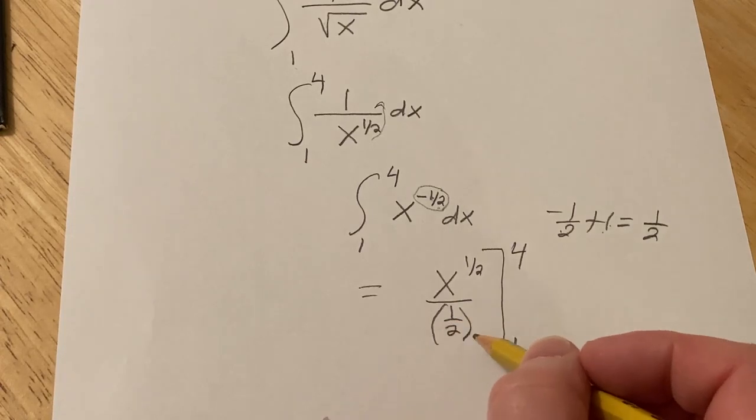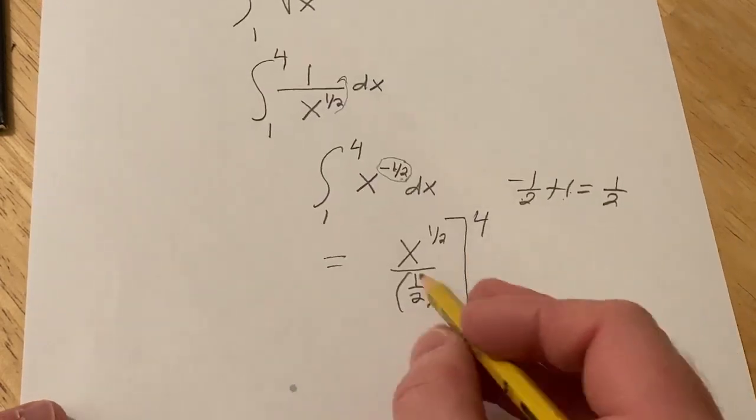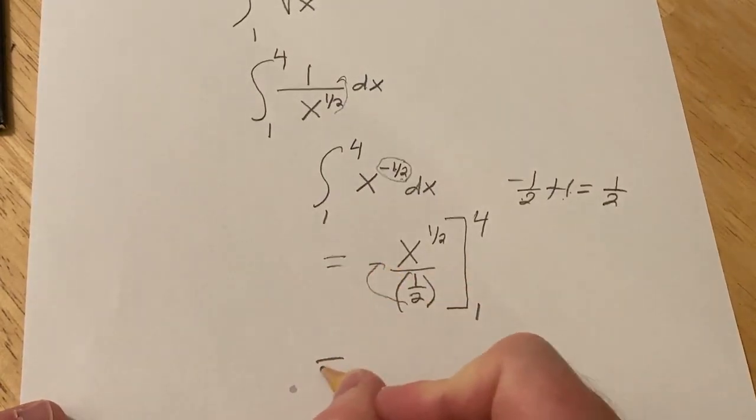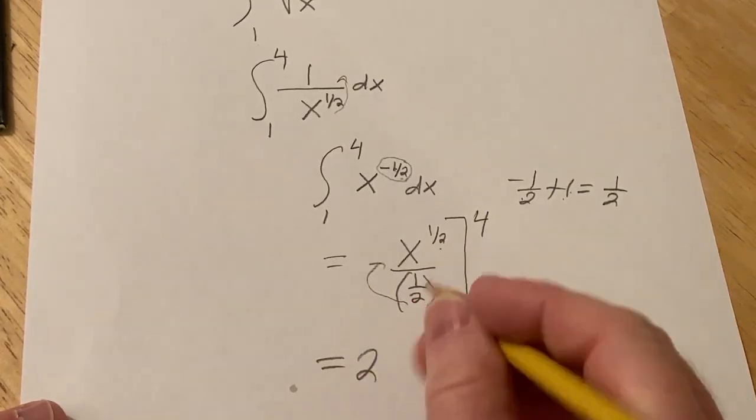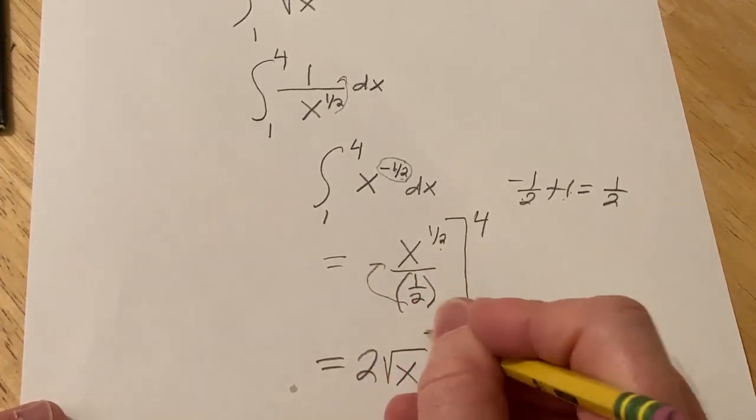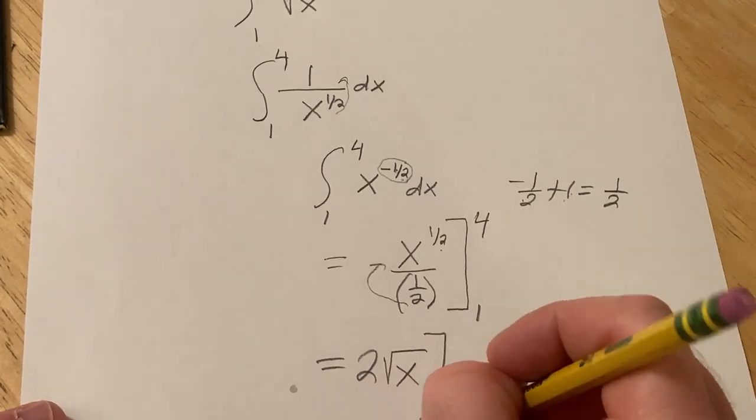Because we're dividing by 1 half we're really multiplying by 2 over 1. So I'm just going to basically flip it and put it here. This is 2 and then x to the 1 half is really the square root of x, and we're going from 1 to 4.